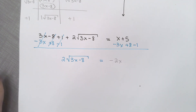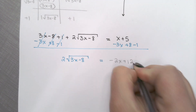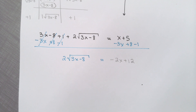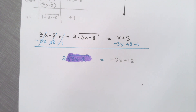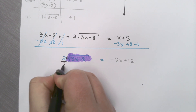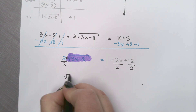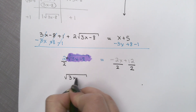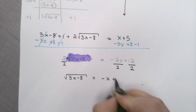Right here, you have a choice to make. I know I need to get everything away from that radical. So I choose to already move things over: I'm going to subtract 3x, add 8, and subtract 1 — all in one step. So we still have 2 times the radical of 3x minus 8. On the right-hand side we can simplify: we have negative 2x, and 5 plus 8 minus 1 gives me 12. Now we're going to make sure the square root is the only thing there. I need to get rid of 2: 2 is attached by multiplication, so we divide by 2. Every single thing needs to be divided by 2. So we have the square root of 3x minus 8 is equal to negative x plus 6.